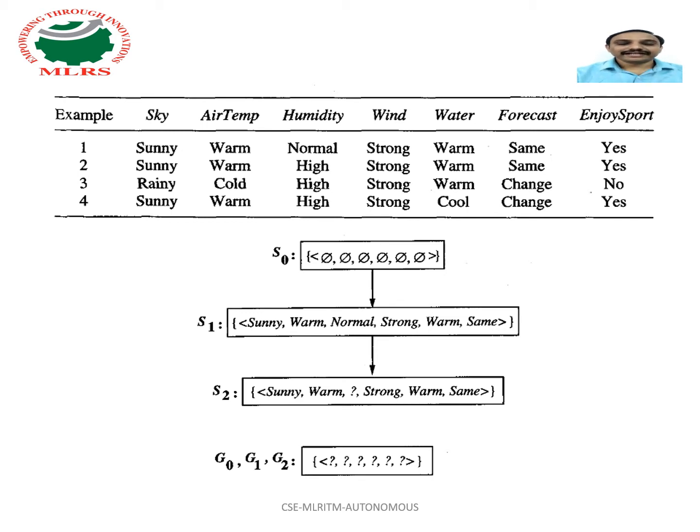When the second training example is observed, which is also positive, it has a similar effect of generalizing S further to S2 and leaving G unchanged. G2 equals G1 equals G0. Here you observe how our S changes from S1 to S2.